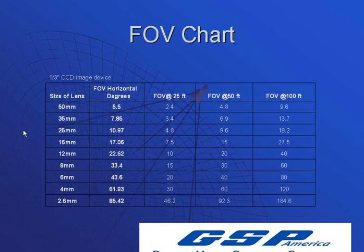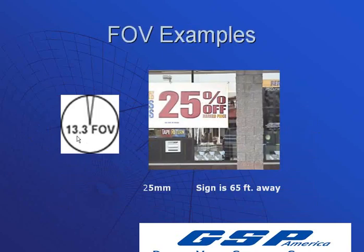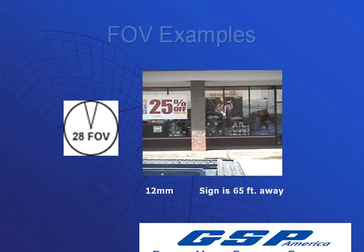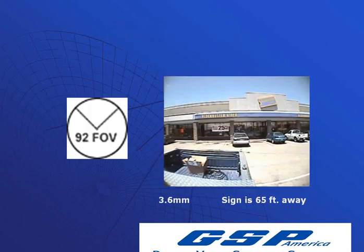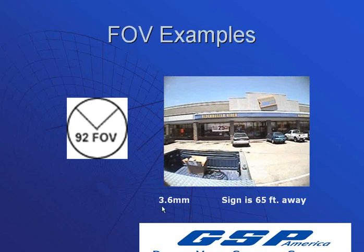Let's give you a visual of some of this. With a 25-millimeter lens, you get a 13.3 horizontal degree field of view, and the sign is about 65 feet away. With a 12-millimeter lens, your field of view is 28 degrees at 65 feet. With a 6-millimeter lens, you get a 53-degree field of view at 65 feet. And with a 3.6-millimeter lens, you get a 92-degree field of view. So a much smaller lens gives you a much wider field of view.